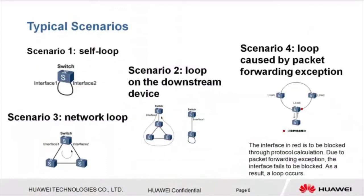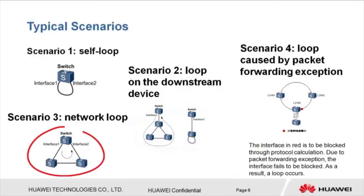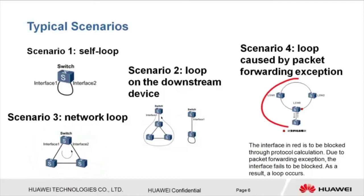Finally, let's see typical scenarios of loops. Scenario 1: Loops occur between two or more interfaces of a device. Scenario 2: A loop occurs on a downstream device, and as a result a loop also occurs on the local device. Scenario 3: A self-loop occurs. Scenario 4: A loop prevention protocol has been configured on the device, but due to protocol packet forwarding exceptions, the protocol does not take effect and a loop occurs.